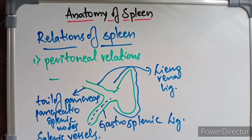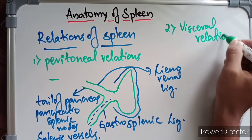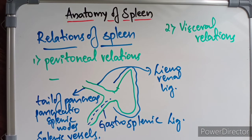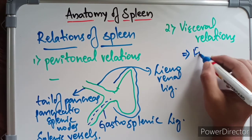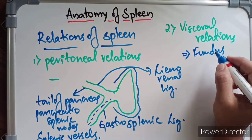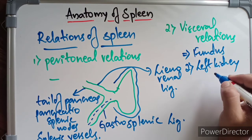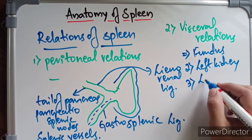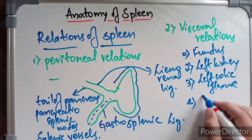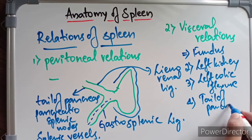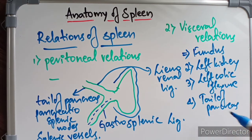The visceral relations of the spleen correspond to the impressions on its visceral surface. First, the fundus of the stomach produces the gastric impression. Second, the anterior surface of the left kidney produces the renal impression. Third, the left colic flexure (also called splenic flexure) produces the colic impression. Fourth, the tail of the pancreas is also related to the spleen near the hilum.